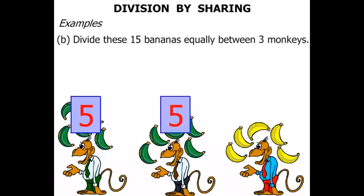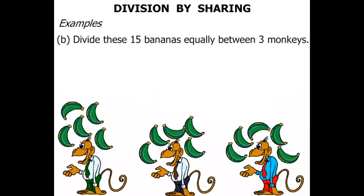Again 5 bananas for the second monkey, and 5 bananas for the third monkey as well. So each monkey gets 5 bananas.